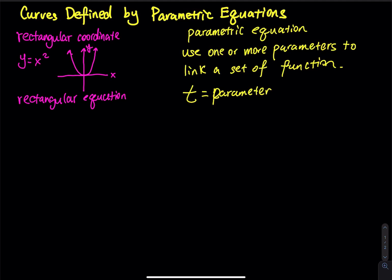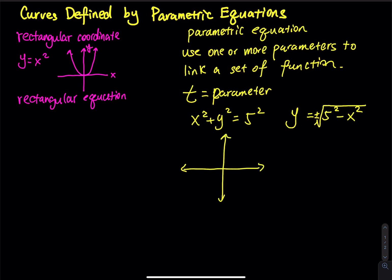Let's recall a rectangular equation: x squared plus y squared equals 5 squared. Solving for y by moving x squared to the other side gives y equals plus or minus the square root of 5 squared minus x squared. The plus square root is the upper half circle and the minus square root is the lower half circle. So x squared plus y squared equals 5 squared is the equation of a circle.